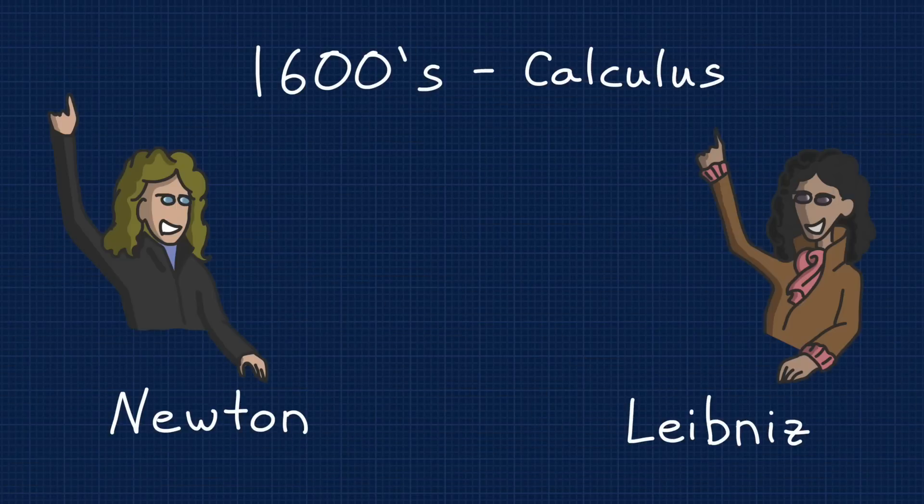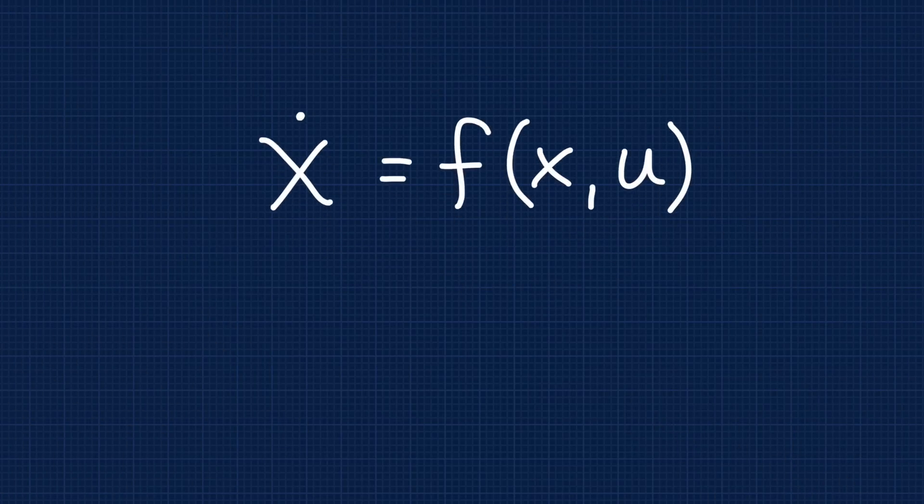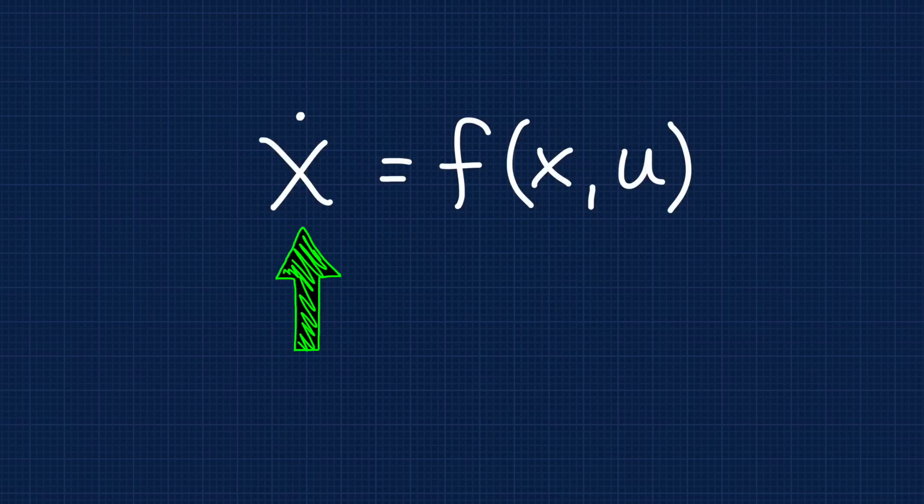Fast forward to the 1600s AD during the Enlightenment period where Newton and Leibniz were independently developing calculus, and from that, differential equations. A differential equation is an equation that relates one or more unknown functions and their derivatives, and this is important because this is one way that dynamic systems are represented mathematically.